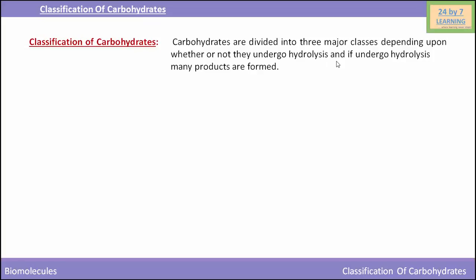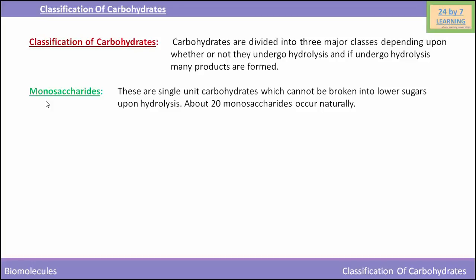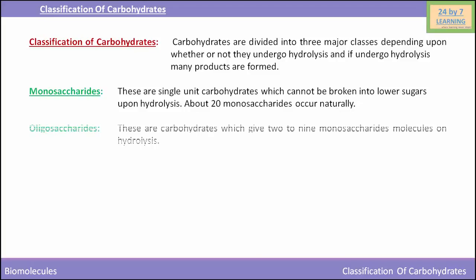Carbohydrates are divided into three major classes depending on whether or not they undergo hydrolysis. The first class is monosaccharides. Monosaccharides are simple carbohydrates which cannot be hydrolyzed further into smaller components. They are composed of three to seven carbon atoms and are single-unit carbohydrates. About 20 monosaccharides occur in nature; examples include ribose, glucose, and fructose.